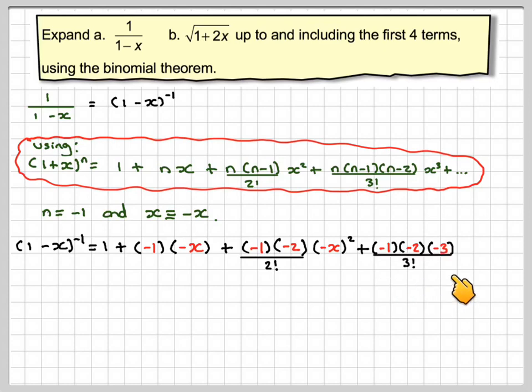Plus (-1)(-2)/2! times (-x)² plus (-1)(-2)(-3)/3! times (-x)³, and carrying on forevermore. This gives me the first four terms, which is what I want. And I can stop there. So simplifying, we get 1, minus 1 times minus x gives me plus x. Now minus 1 times minus 2 is 2 divided by 2 gives me 1, and then minus x squared gives me plus x squared.